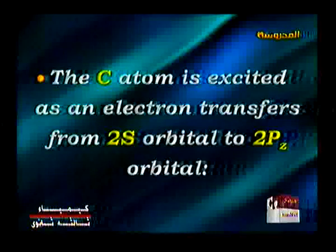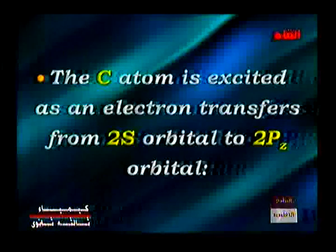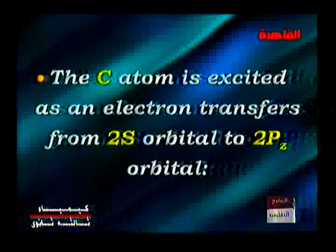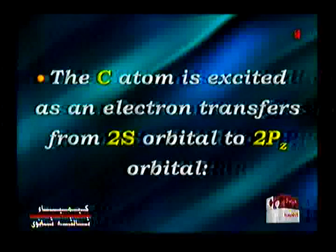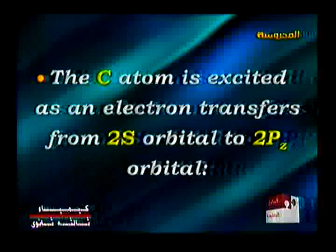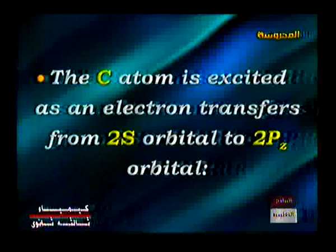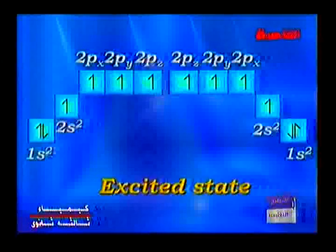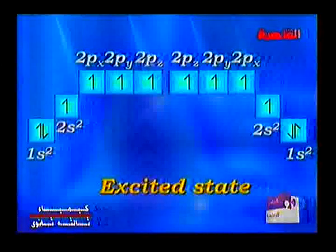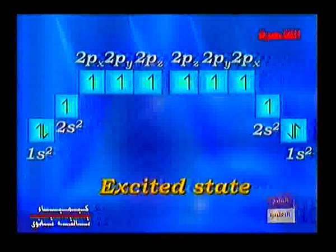The carbon atom is excited, and an electron transfers from the 2s orbital to the 2pz orbital. So we get the excited state carbon atom has electronic configuration 1s2, 2s1, 2px1, 2py1, 2pz1 for each carbon atom.